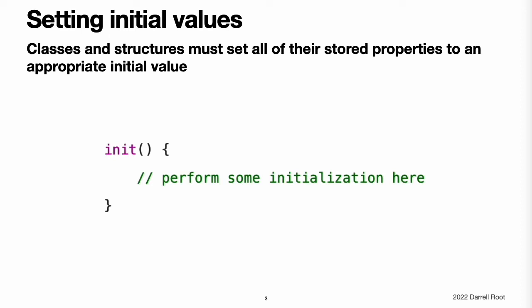Setting initial values for stored properties. Classes and structures must set all of their stored properties to an appropriate initial value by the time an instance of that class or structure is created. Stored properties cannot be left in an indeterminate state. You can set an initial value for a stored property within an initializer or by assigning a default property value as part of the property's definition.